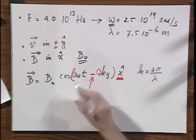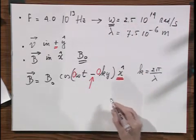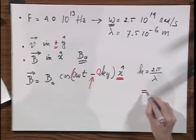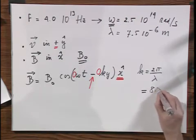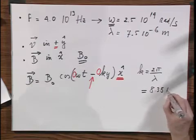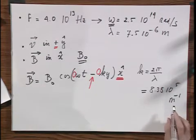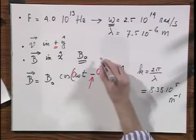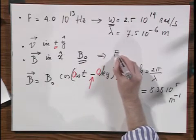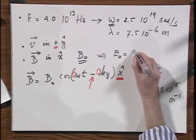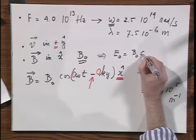Well, omega, you already know. If you are interested in K by any chance, then I believe that is 8.38 times 10 to the 5 meters minus 1. Now, since you know B0, you also know E0, because E0 equals B0 times C.